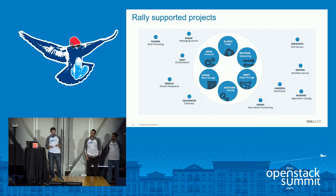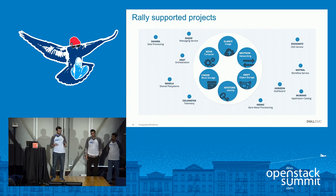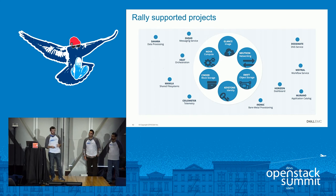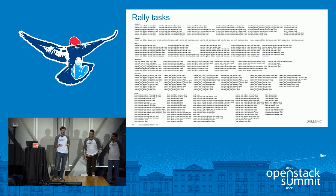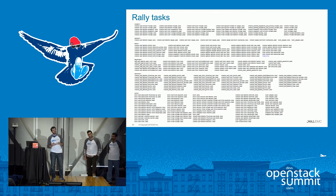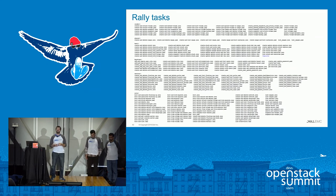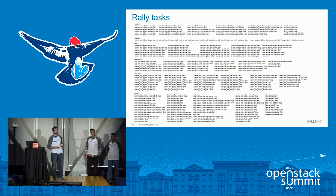Now I want to talk about the different OpenStack projects that are supported by Rally. As you can see, all the core projects are supported, and mostly all the other big projects are supported too — only the most mature projects are included right now. Every single operation that a user can do in OpenStack is already defined and coded in Rally — create a VM, create a volume, create a snapshot, attach a volume to a VM, attach a floating IP, create a subnet, a router — all those things are already coded and available as tasks for you to reuse.